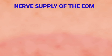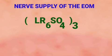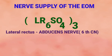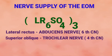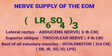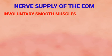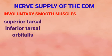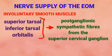For the nerve supply of the extraocular muscles, a common mnemonic LR6SO4 (rest 3) is used. LR means lateral rectus, supplied by the sixth cranial nerve — the abducens nerve. SO means superior oblique, supplied by the fourth cranial nerve — the trochlear nerve. The rest of the voluntary skeletal muscles are supplied by the third cranial nerve — the oculomotor nerve. The involuntary smooth muscles are supplied by post-ganglionic sympathetic fibers from the superior cervical ganglion.